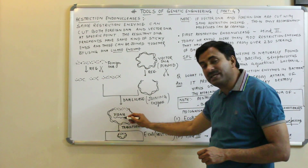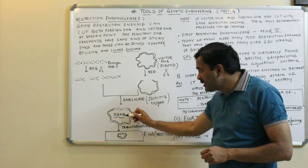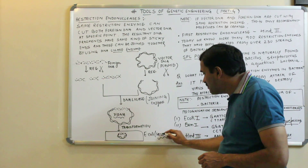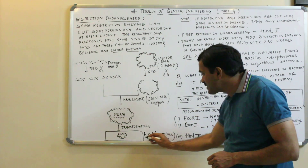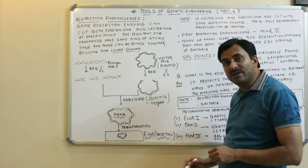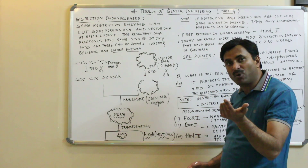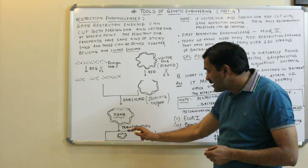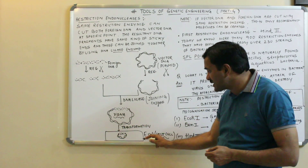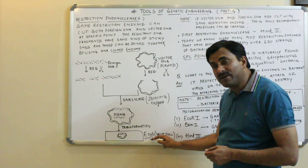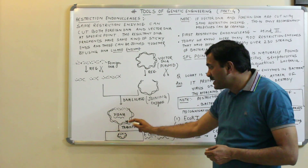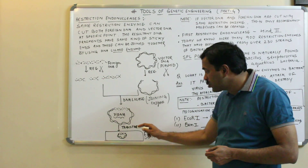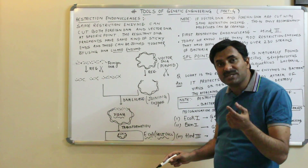The vector DNA and foreign DNA combine together to form recombinant DNA. This recombinant DNA is then introduced into the host cell — the best host cell is E. coli bacteria. When the recombinant DNA enters into the host cell, that host cell is referred to as a transformed cell, and the entire process is called transformation.